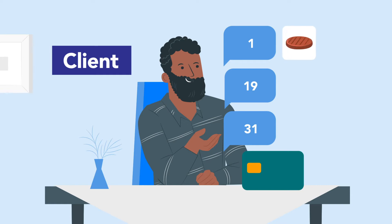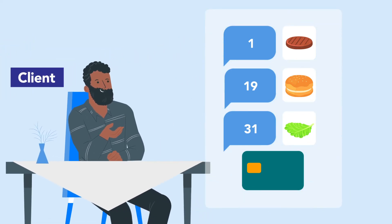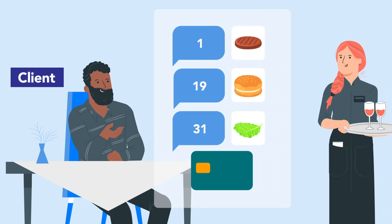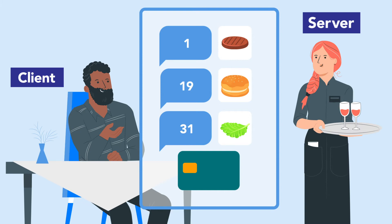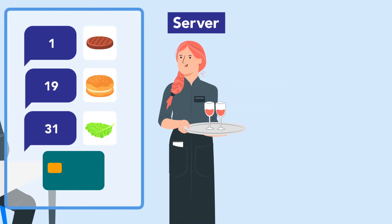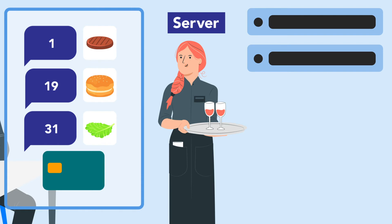Number 1 corresponds to a burger, number 19 a bap, and number 31 is some lettuce. Who hears my order? Who does this request go to? If you're in the UK, you'd call them a waiter, but if you're in the US, you'd call them a server. So the server receives my request. The server has just heard me order numbers 1, 19, and 31, and gotten my credit card. Before they go to the chef to make the food, the server needs to do some checks to know what to do with that information.